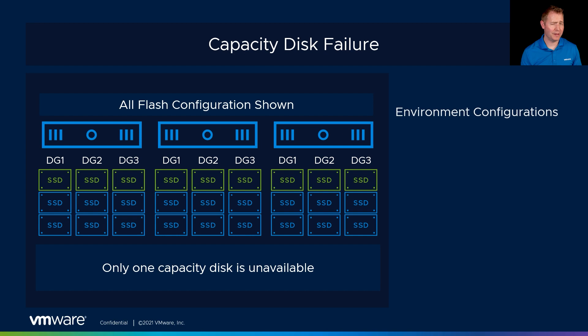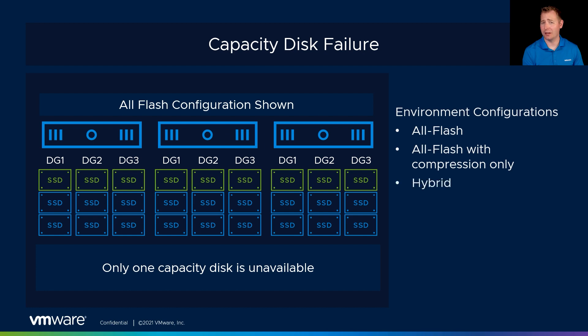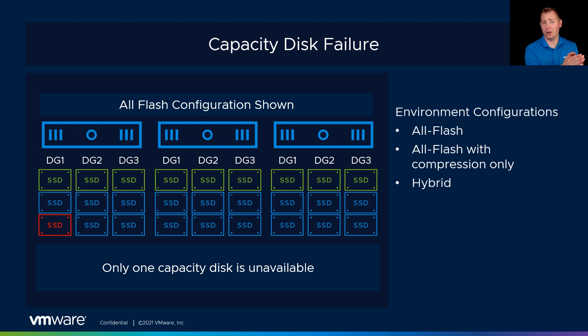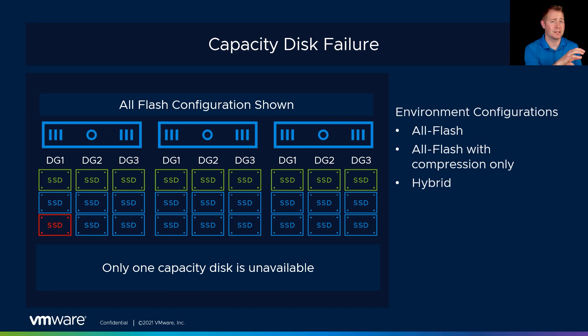The second failure scenario is a capacity disk failure. In a capacity disk failure, it really depends on what configuration you have — all-flash, all-flash with compression only, or hybrid. In that situation, let's say on host one our capacity disk two failed. We can take advantage of our storage policies, which can protect against anywhere from one failure all the way up to three failures in the environment. We would pull that data from somewhere else and put it on another healthy disk.